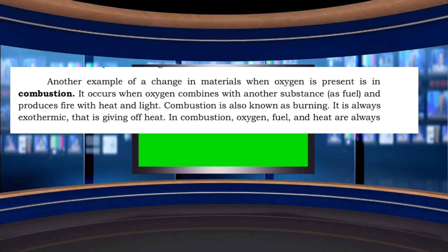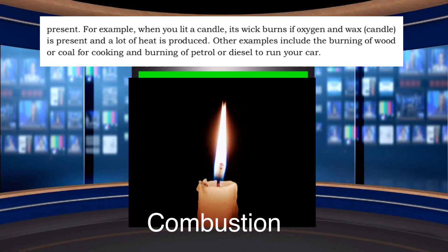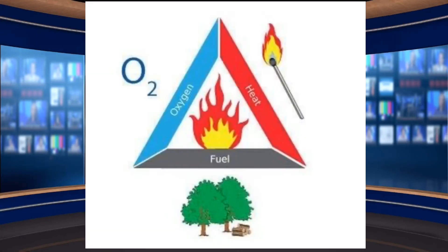Combustion occurs when oxygen combines with another substance like fuel and produces fire, heat, and light. Combustion is also known as burning. It is always exothermic — that is, it gives off heat. In combustion, oxygen, fuel, and heat are always present. For example, when you light a candle, its wick burns if oxygen and wax are present and a lot of heat is produced. To have combustion or burning, we need three materials — the first is fuel.